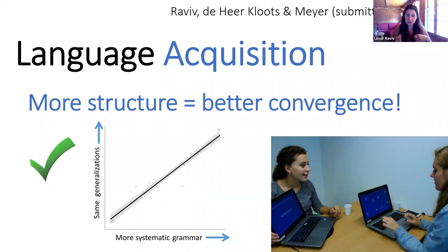This finding suggests that systematicity can allow strangers to converge effortlessly — people who never interacted before could potentially communicate successfully about new things and be immediately understood. The benefits of linguistic structure or grammar go beyond learnability: it's also advantageous for communication between individuals and aids productivity in general languages.